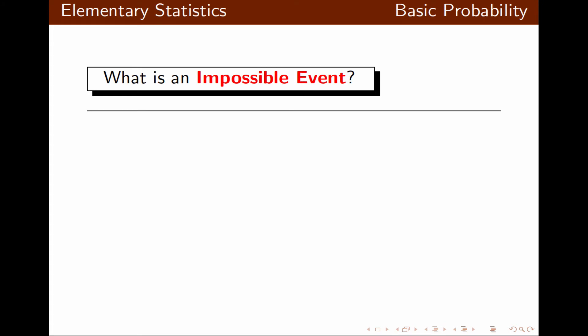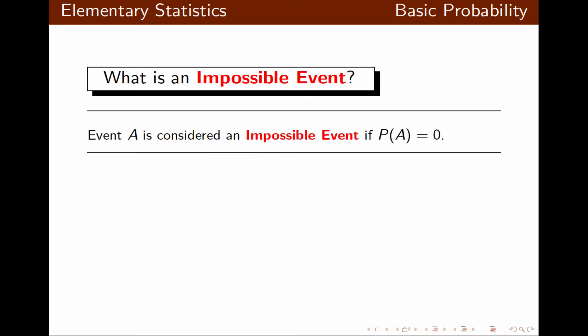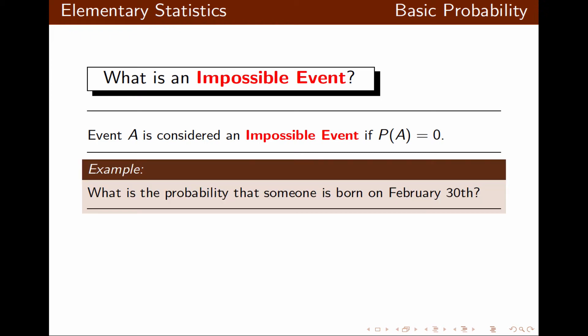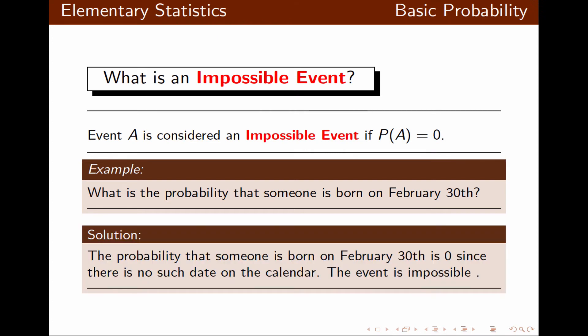What is an impossible event? Event A is considered an impossible event if the probability of A is 0. For example, what's the probability that someone randomly selected is born on February 30th? There is no February 30th on the calendar, so that event cannot happen — therefore it is an impossible event.